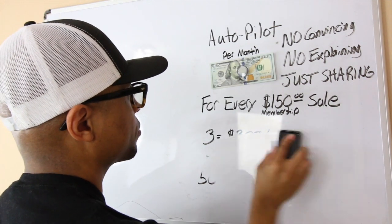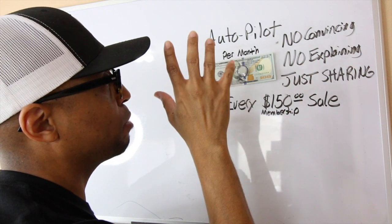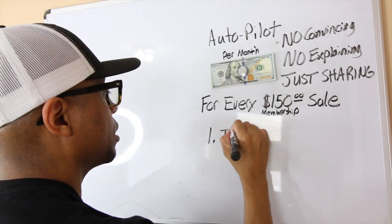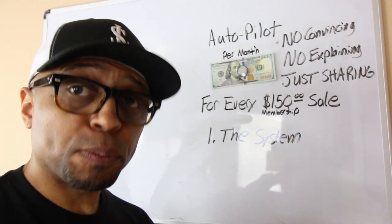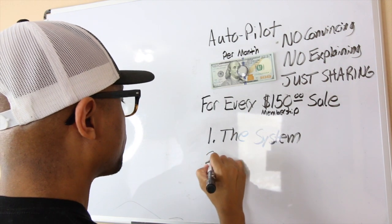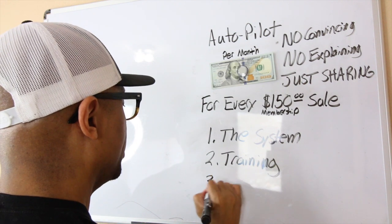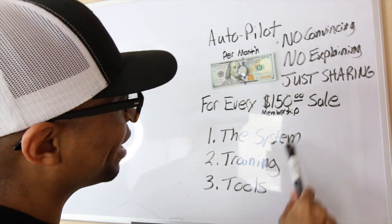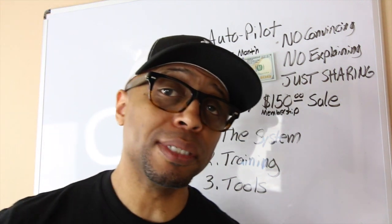There are three components that make up this particular formula. I know a lot of people who have made millions of dollars using this system. Number one: the system. Number two: training. Number three: tools. This formula can definitely make you a lot of money, getting those $100 monthly residual commissions hitting your account every single month per member.